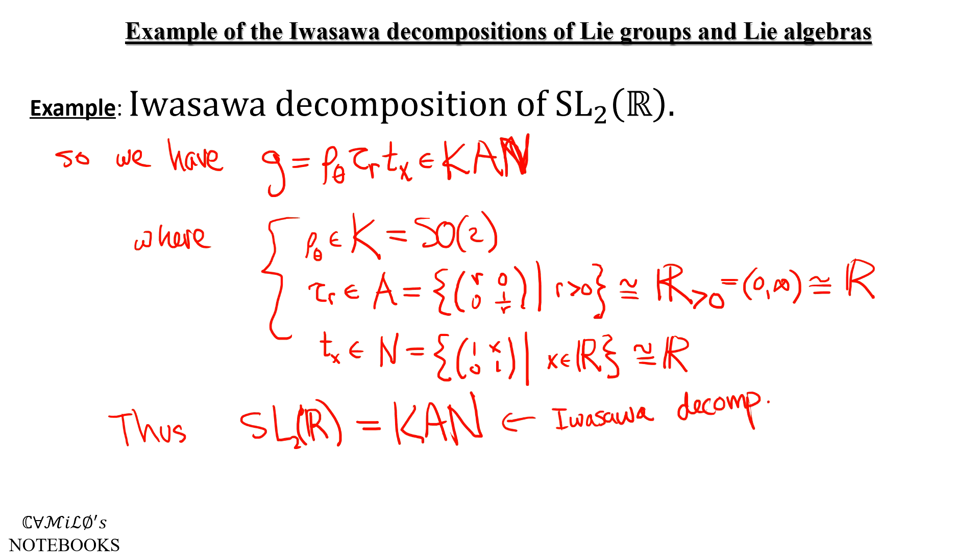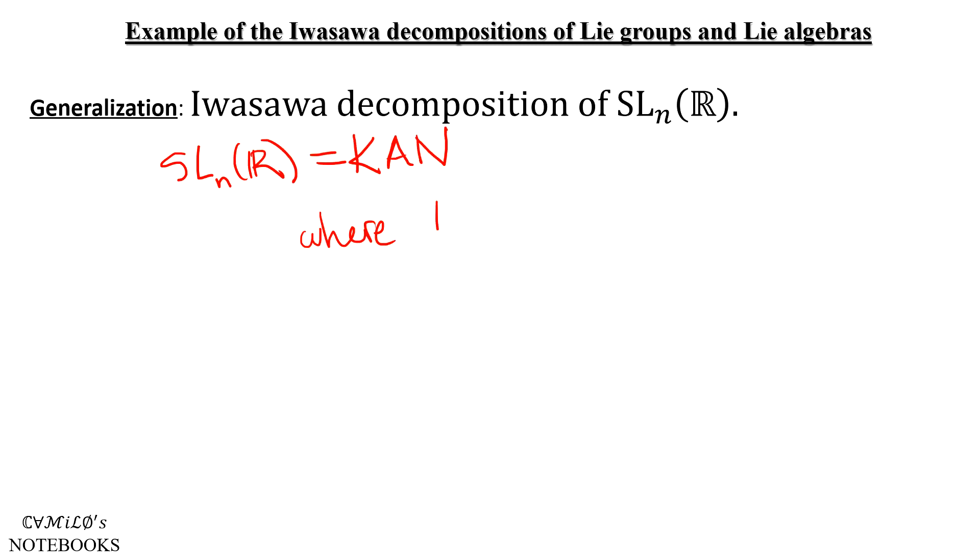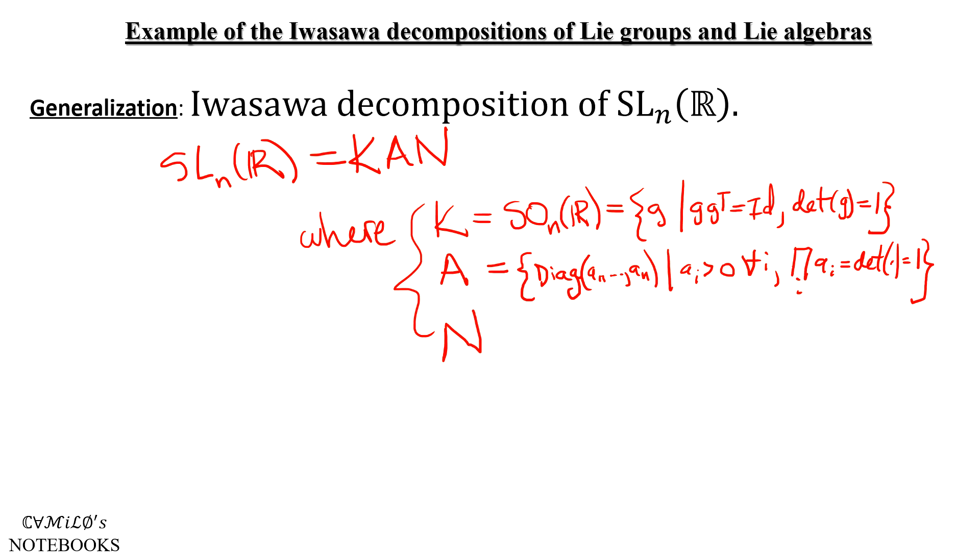This decomposition extends into higher dimensions. We can decompose SLₙ(ℝ), the special linear group of n by n matrices, again as some K times A times N, where in this case, K will be the special orthogonal matrices of dimension n. A, our abelian group, will be the group of diagonal matrices with positive diagonal entries and determinant 1, and N will be the group of upper triangular matrices with ones along the main diagonal.